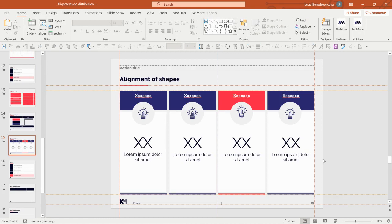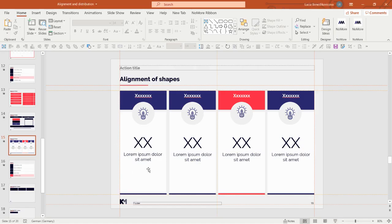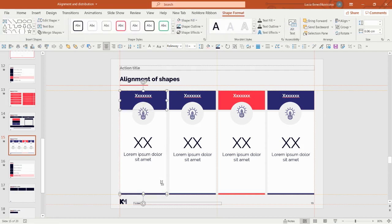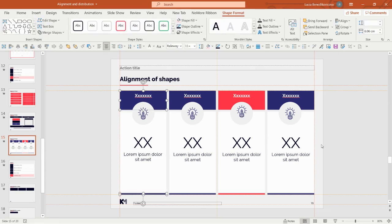Now let's see one more alignment example. Sometimes misalignments are not obvious in the editing view, but if you go to presentation mode you can see shapes are not properly aligned. There may also be issues like an icon not perfectly centered in its circle, or a circle not centered within the shapes. I highly recommend always rechecking your slide in presentation mode — it is very helpful for spotting small misalignments.